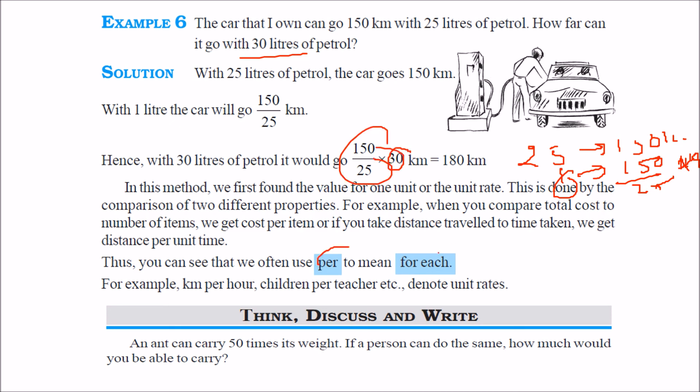When we talk about per or for each, that means per and for each are same. That means kilometer per hour, that means kilometer per each hour. That is children per teacher, that is children per teacher means children for each teacher.